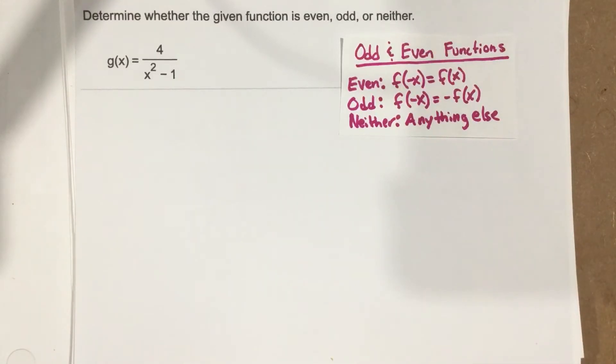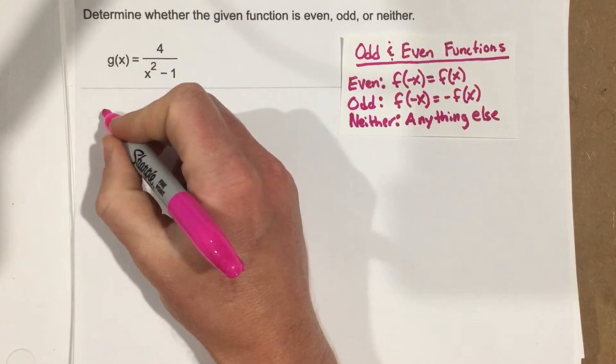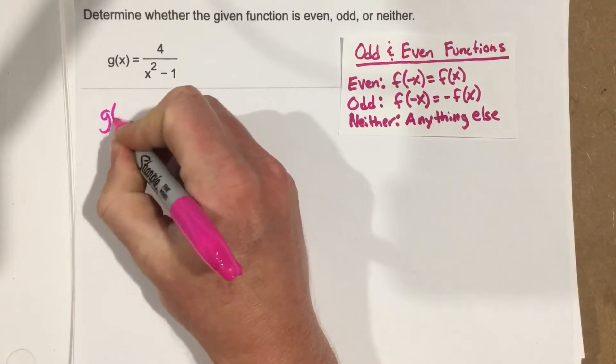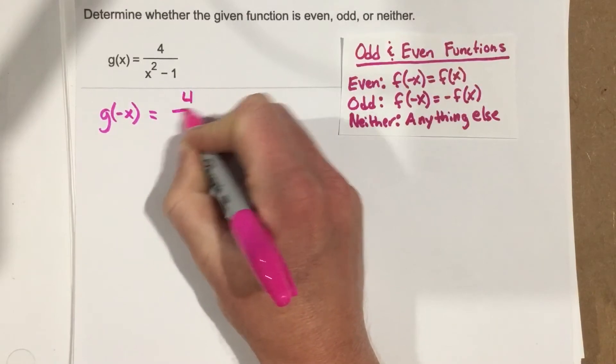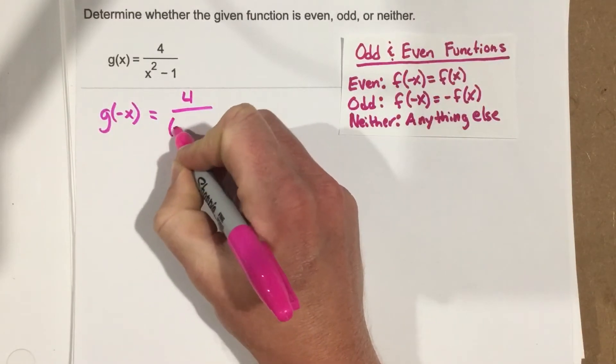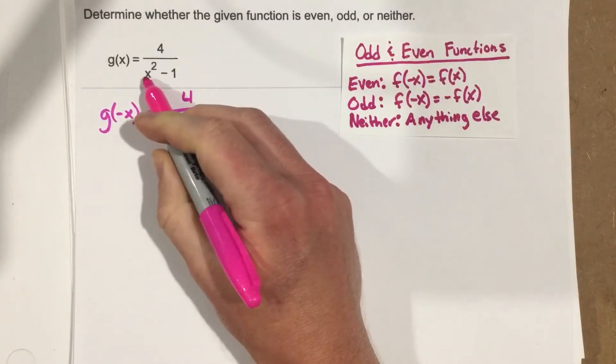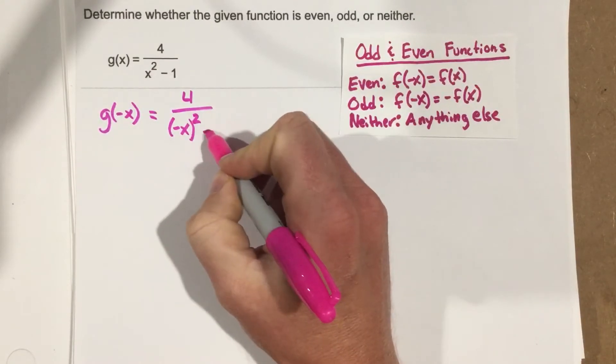So what we want to do is we want to test a negative input in here. So we're going to say g of negative x equals 4 over negative x, because we've got to plug it in for x, squared minus 1.